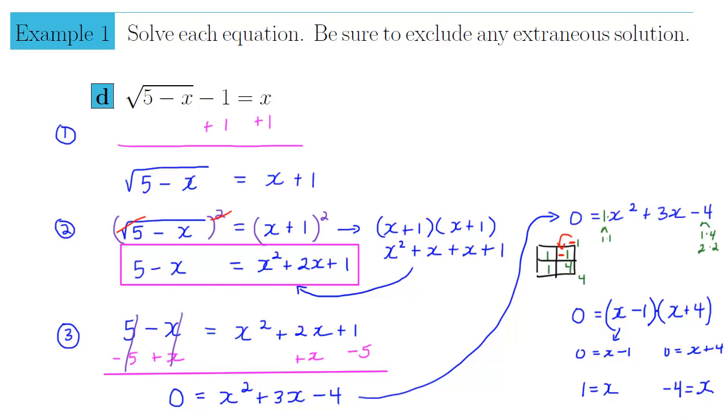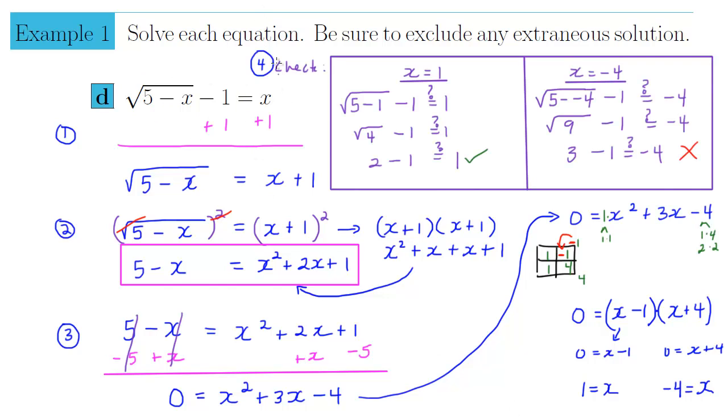Now the question becomes, do both of these work? We really do have to check here to make sure that both of these proposed solutions satisfy the original equation. So here's our final step, step 4. We have to check our proposed solutions. After solving our quadratic, we got x equals 1, or x equals negative 4 as our proposed solutions.